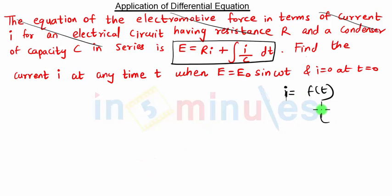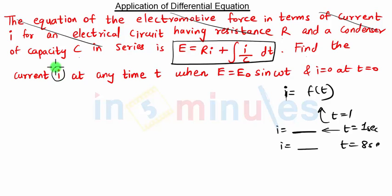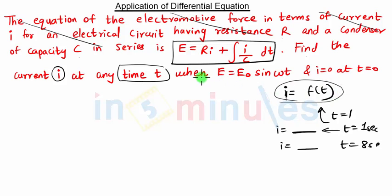When we put time equal to one second we get the value of current at t = 1s, and when we put t equal to eight seconds we get some other value of current. We need the equation of current as a function of T. The condition is given: when E = E₀ sin(ωt) and I = 0 at t = 0.